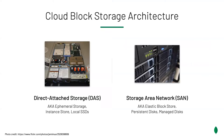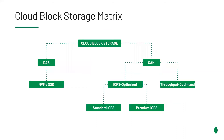There are two cloud block storage architectures. Direct attached storage, also known as DAS — also called by cloud providers as ephemeral storage, instance store, or local SSDs — and these are the disks physically located in the server enclosure. And the storage area network, or SAN — also known by cloud providers as elastic block store, persistent disks, or managed disks — and these are racks of disks attached to servers by a network interface.